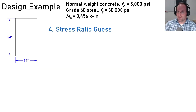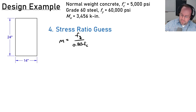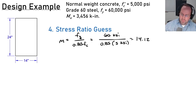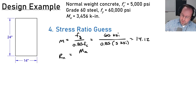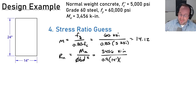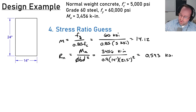The second estimate uses the stress ratio method. First compute the stress ratio m = fy / (0.85 f'c) = 60 ksi / (0.85 × 5 ksi) = 14.12 (unitless). Next compute the stress demand Rn = Mu / (φ · b · d²) = 3,456 kip-in / (0.9 × 14 in × 21.5² in²) = 0.593 ksi.